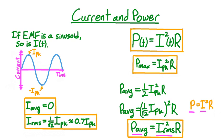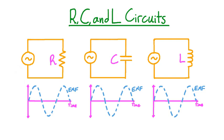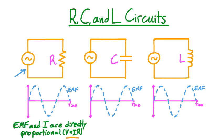Let's now see how alternating voltage and alternating current relate to each other in resistive, capacitive, and inductive circuits. We've drawn three circuits, each with an alternating voltage source connected to a single component: a resistor of resistance R, a capacitor of capacitance C, and an inductor of inductance L. The letter L is used in honor of physicist Heinrich Lenz, because Lenz's law plays an important role in inductors. For each circuit, we've drawn the sinusoidal EMF on a graph as a blue dashed curve. For the resistive circuit, Ohm's law tells us that voltage and current are directly proportional — V equals IR — so the current, shown as the green solid line, has exactly the same shape as the EMF but with a different magnitude.